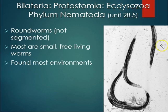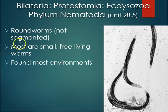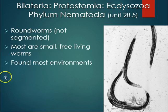The main characteristic of Ecdysozoans is that they have to shed their exoskeletons in order to grow. So nematodes, or roundworms, are next. Roundworms are not segmented — we just talked about the annelids that were segmented worms. Nematodes do not have segments. They are mostly small free-living worms found in pretty much any environment: soils, water, salt water, fresh water, even vinegar. There are free-living as well as parasitic species.